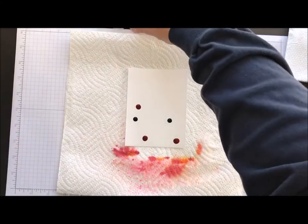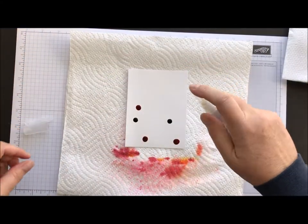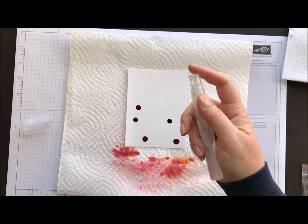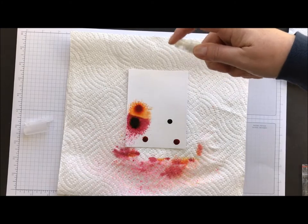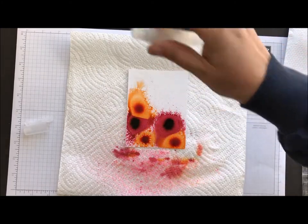Now you need a spritzer of water. Anything works. This is our Stampin' Spritz. You can use an empty sprayer bottle. Anything. Just plain water. No alcohol. And you're just going to start spritzing and letting those bleed.